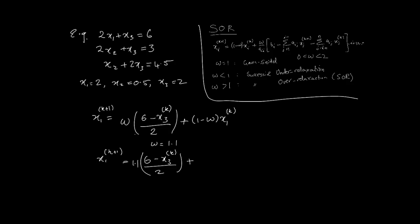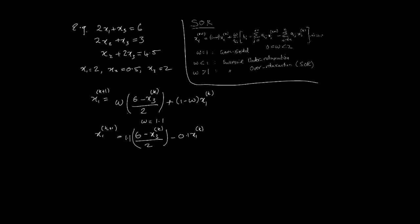If I use w equals 1.1, then I end up with x1_(k+1) equals (6 - x3_k)/2 times 1.1, plus -0.1 times x1_k. It's saying let's speed up the new iterations, the old iteration of x1 is being given less weight. Let's do the rest of the iterative equations. x2_(k+1) in the same way is just going to be 1.1 times (3 - x3_k)/2, minus 0.1 times x2_k.